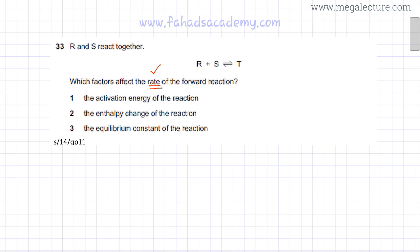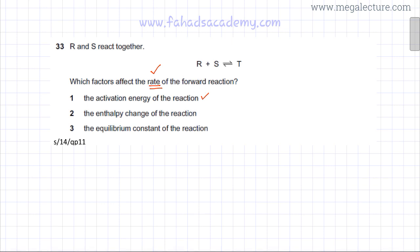The rate of the reaction is going to be affected by the activation energy of the reaction, because the lower the activation energy, the faster the reaction is going to be. So activation energy is one major factor in determining rate. You can reduce activation energy by adding a catalyst.